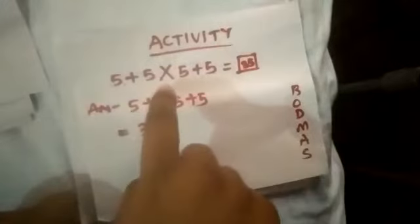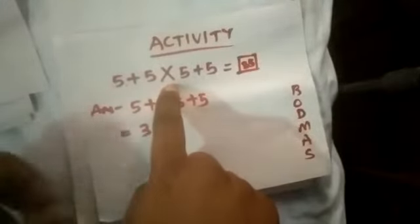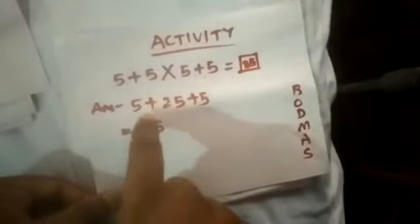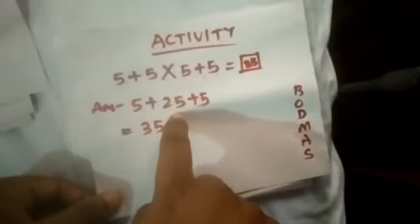The last activity is 5 plus 5 multiplied by 5 plus 5 equals what? According to BODMAS rule, first is multiplication, next is addition. So 5 multiplied by 5 is 25, then when we add 5 with 25 with 5, we get the answer 35.